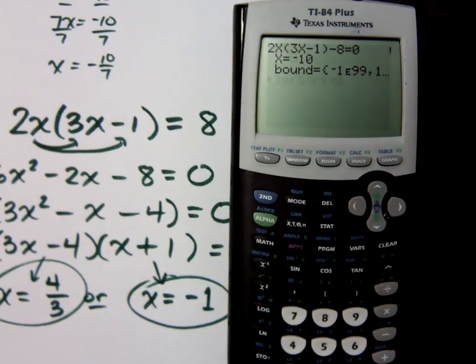What's the closest solution to negative 10? It tells me negative 1. Does that match up? Awesome. Then how do I find my other solution? Positive 10. Let's see which one is closest to positive 10. It tells me that guy.